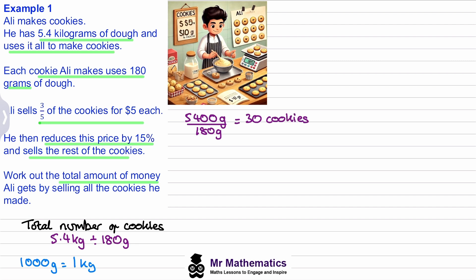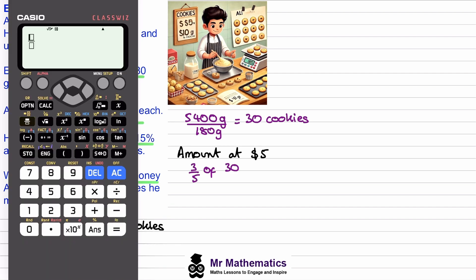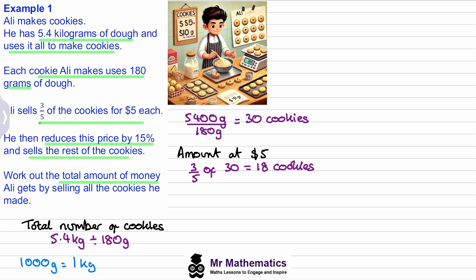He sells all of these, and he sells three fifths of them at five dollars each. So we need to work out three fifths of 30. We can do this on our calculators — enter the fraction three over five then multiply by 30, and we get 18. So he sells 18 cookies at five dollars each.